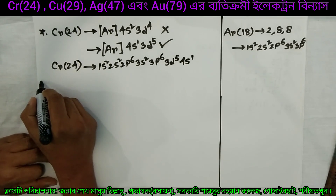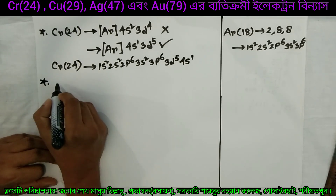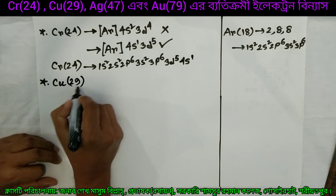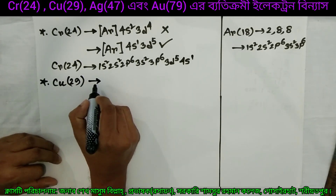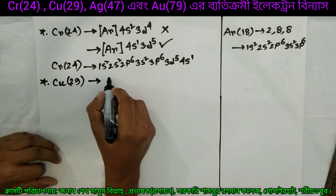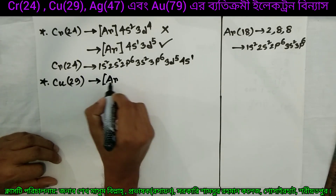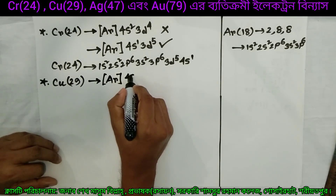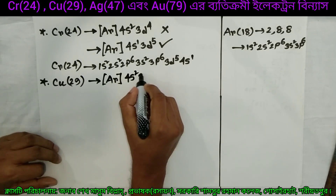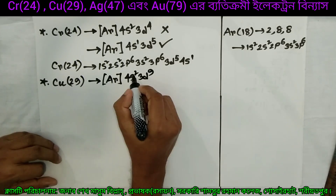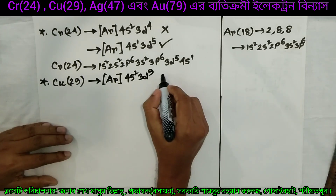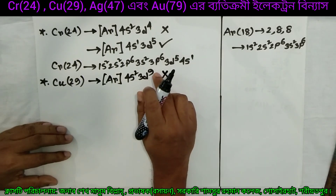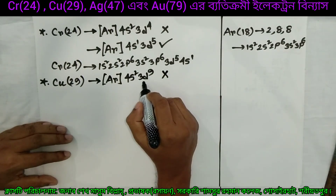Next we write copper — Cu, copper-29 — and its configuration involves 3d9, leading to 3d10.